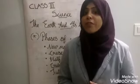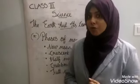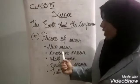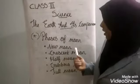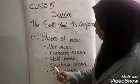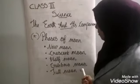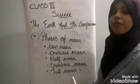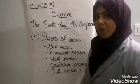There are different phases of moon. The first one is new moon, the second is crescent moon, the third is half moon, the fourth is gibbous moon, and the fifth is full moon.